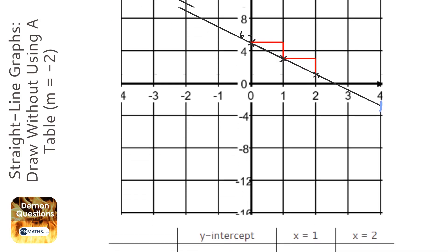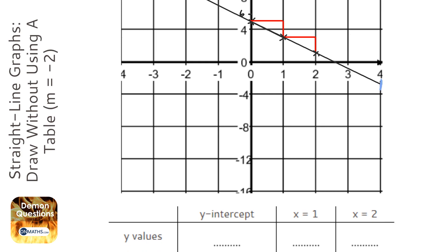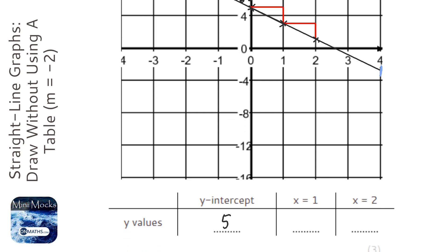So our points are, so we started at 5, so our y-intercept was 5. Then we went down 2, so we ended up at 3. And then we finally ended up at 1 when x was 2.